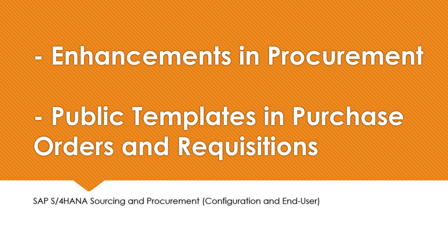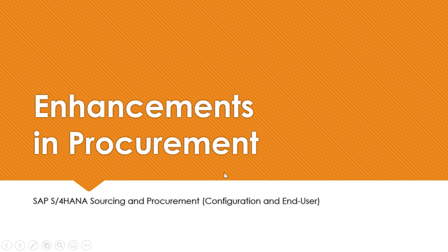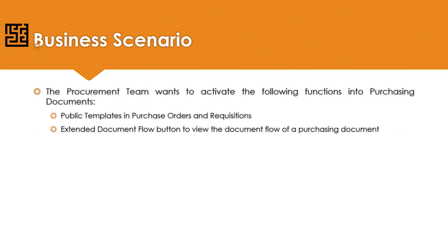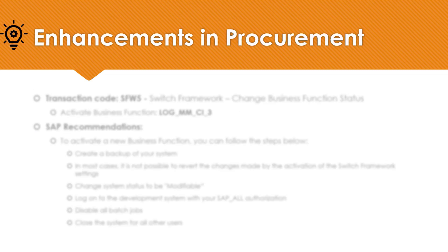I will demonstrate enhancements in procurement and public templates in purchase orders and requisitions, along with their configuration and end user activities. The procurement team wants to activate the following functions into purchasing documents: public templates in purchase orders and requisitions, and an extended document flow button to view the document flow of a purchasing document. We can fulfill these business requirements by making enhancements in procurement.